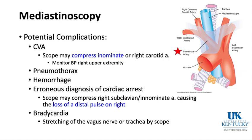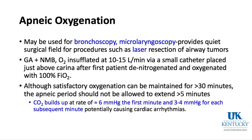Erroneous diagnosis of cardiac arrest can occur if the innominate is compressed and there's no pulse on the right side — however, end-tidal CO2 and heart sounds should still be present. Bradycardia can occur because the vagus nerve is nearby; stretching it with the scope can produce reflex bradycardia.